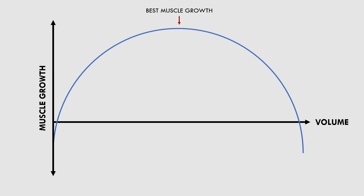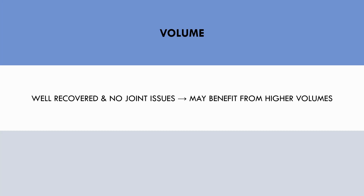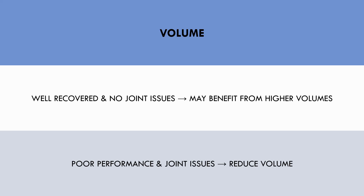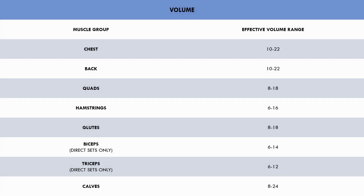So how do we know how much volume to perform? If the trainee feels well recovered from training and has no lingering joint issues, they can experiment with higher volume for that particular muscle group. If a trainee is performing fairly high volumes already and feels some new joint irritations, or they are seeing negative results in performance, then they may be performing too much volume and will see better hypertrophy with slightly lower volumes. Here is a general guide of how much volume is a good place to start for each major muscle group for most intermediate trainees. You can play around with the volume within these ranges and adjust training based on your individual response.